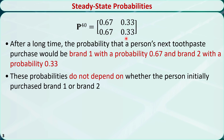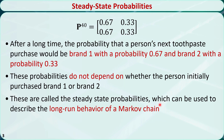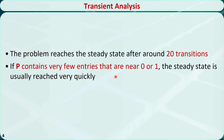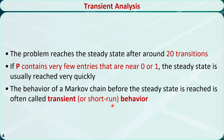These probabilities do not depend on whether the person initially purchased brand 1 or brand 2. These are called the steady state probabilities, which describe the long-term behavior of a Markov chain. The problem reaches steady state after around 20 transitions. In general, if the one-step transition matrix P contains very few entries near 0 or 1, the steady state is usually reached very quickly. The behavior before reaching steady state is called transient or short-run behavior.